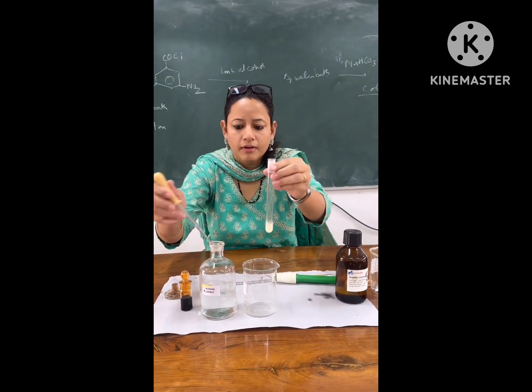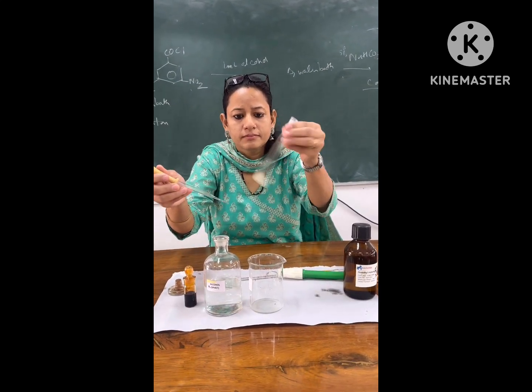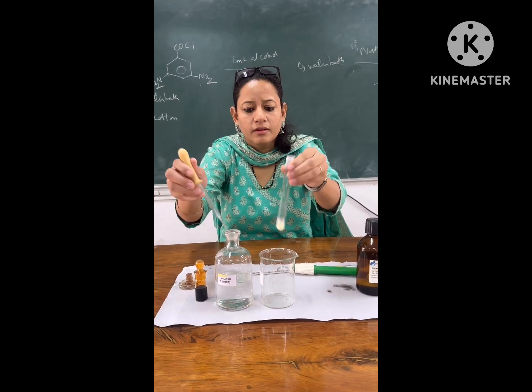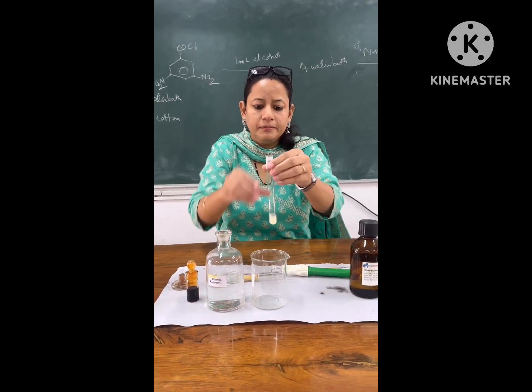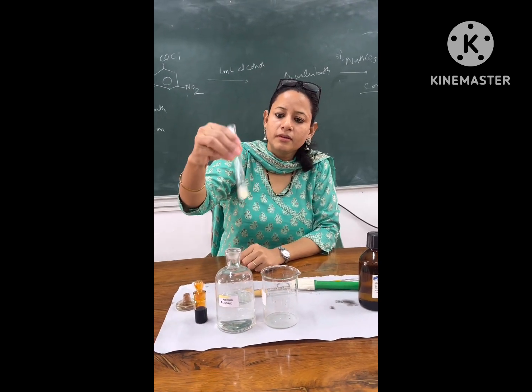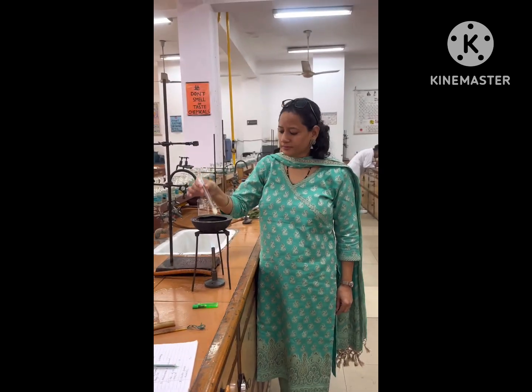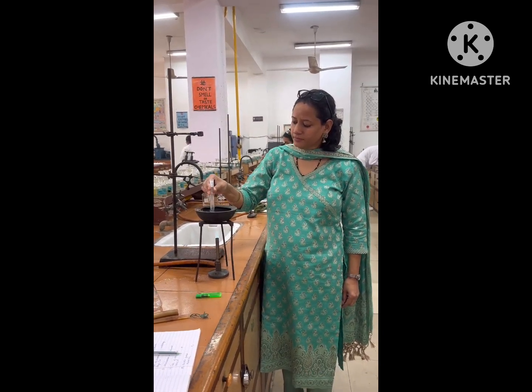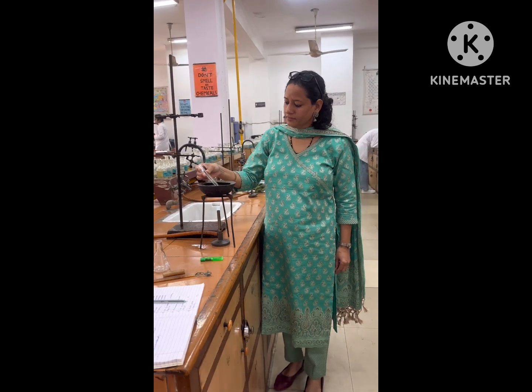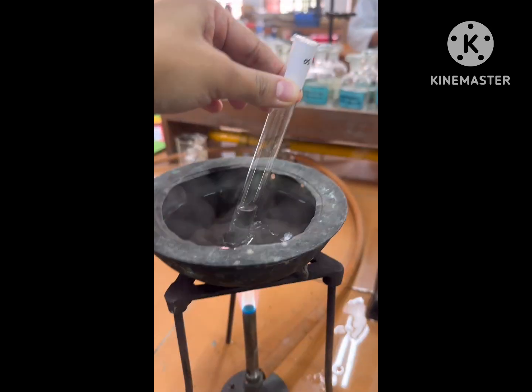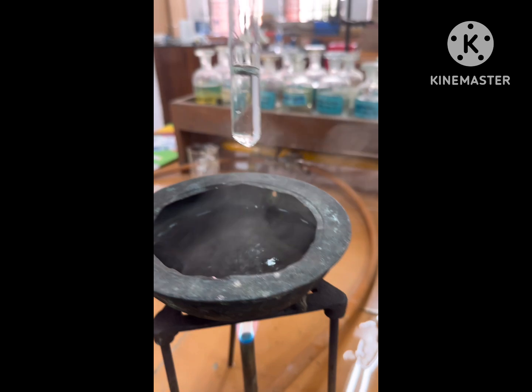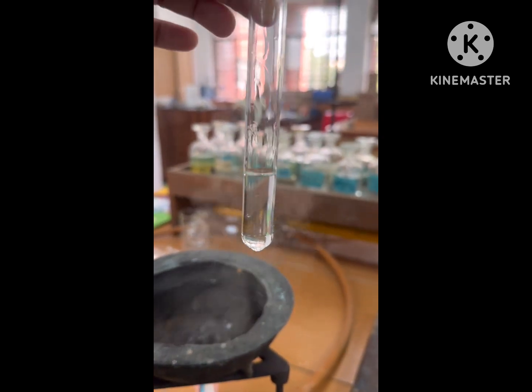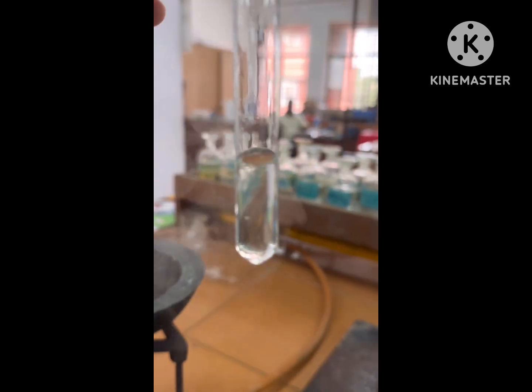Now we add ethanol to this dimethyl fumarate for recrystallization. Ethanol is added to it and then it is heated on a water bath till all the solid dissolves. Now you can see all the solid has dissolved in the hot alcoholic solution.